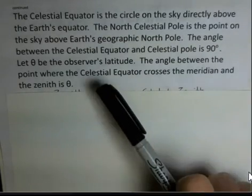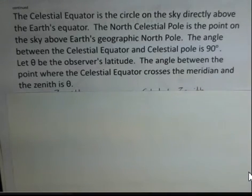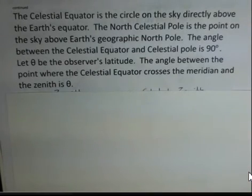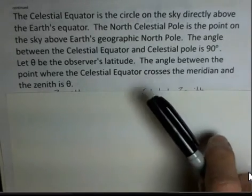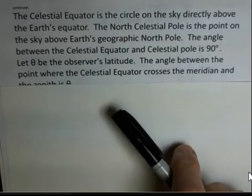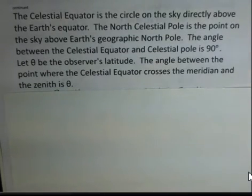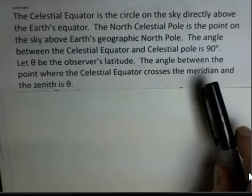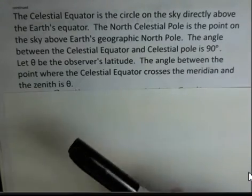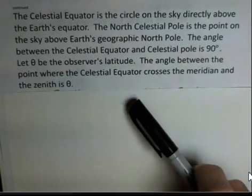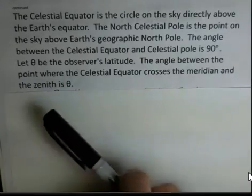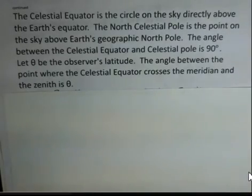So 90 degrees from the celestial equator to the North Celestial Pole. We're going to let theta be the observer's latitude, and do some work with angles here. The angle between the point where the celestial equator crosses the meridian and the zenith is theta — that angle is the latitude.